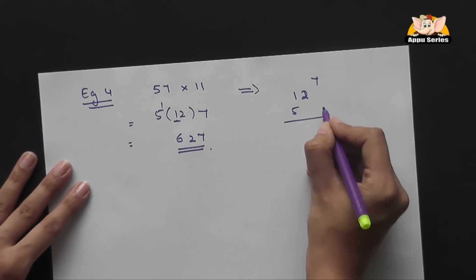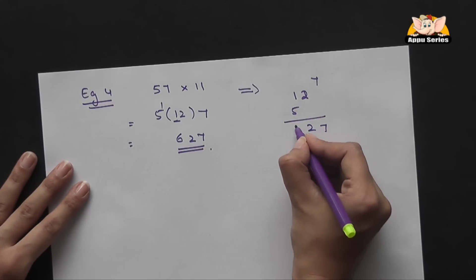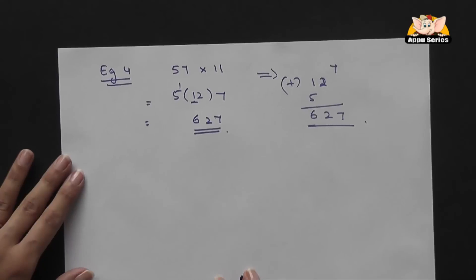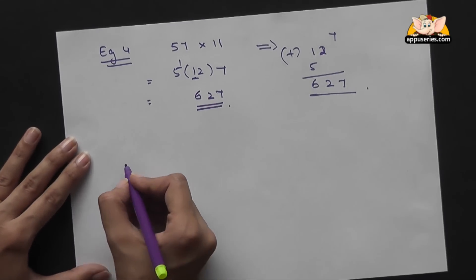You just have to add it up and you get 627. We'll take another example now, a little difficult one.